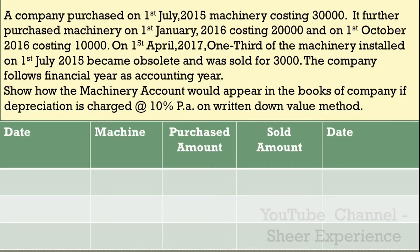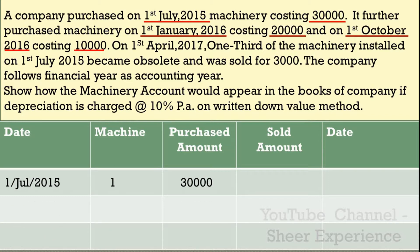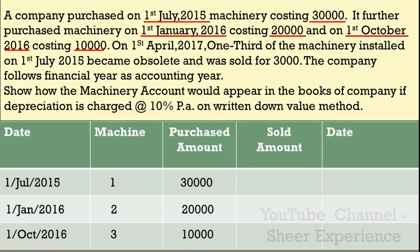A company purchased on 1st July 2015 machinery costing $30,000. It further purchased machinery on 1st January 2016 costing $20,000, and on 1st October 2016 costing $10,000. So we have three machines. On 1st April 2017, one-third of the machinery installed on 1st July 2015 became obsolete and was sold for $3,000.